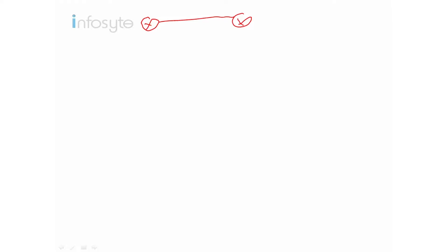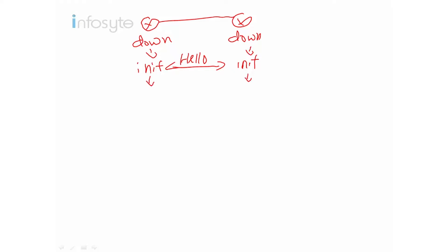Coming back to the whiteboard using the same example: from the down state, they go to the init state. Under the init state they send the hello packet. After the hello packet matches, they form the peering — the neighbor relationship. In OSPF, this state is called the two-way state. At the two-way state, they know who their neighbor is and what information they have.